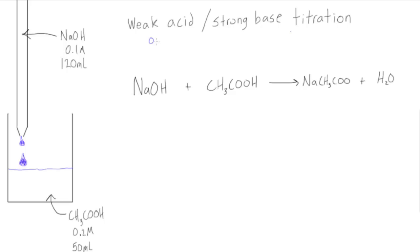We have 0.1 moles per liter times 0.12 liters and this is going to give us 0.012 moles of NaOH. And for acetic acid again we know we have 0.2 molar times 0.05 liters, this is giving us 0.01 moles of CH3COOH.